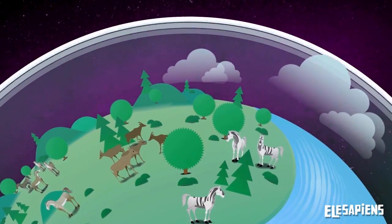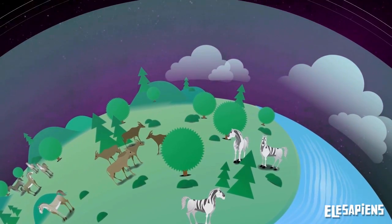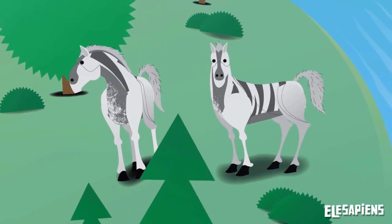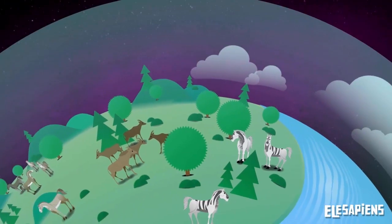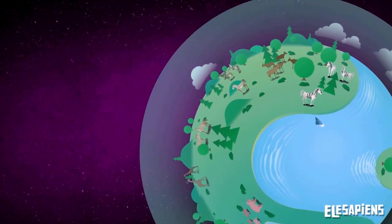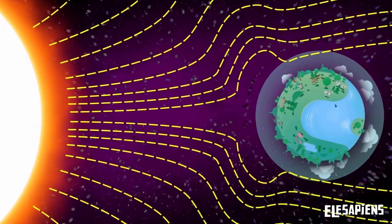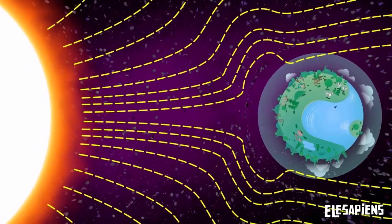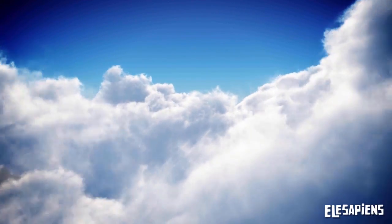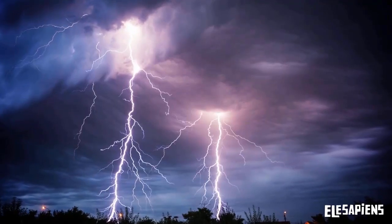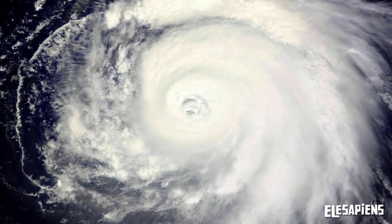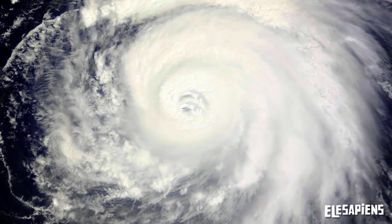The atmosphere is a layer of air surrounding the Earth. It allows all living things to breathe, regulates the planet's temperature, and protects it from particles and radiation from the sun and from outer space. All phenomena that determine weather conditions occur in the atmosphere: clouds, rain, winds, storms and hurricanes are formed in the atmosphere.